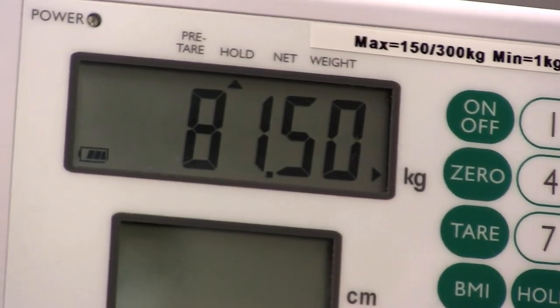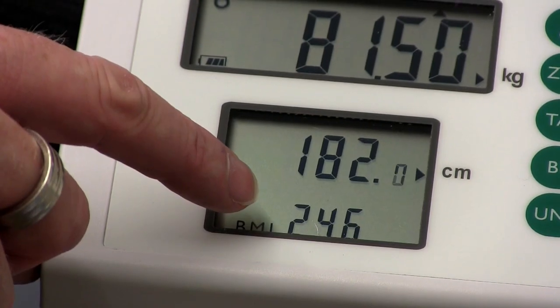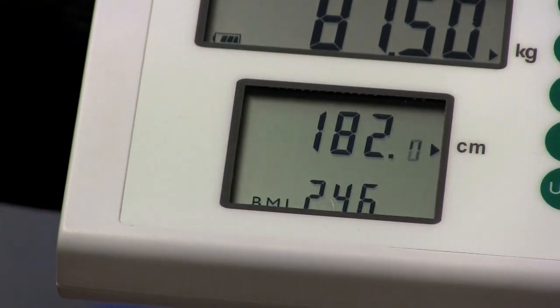An optional printer can also be connected to the scale, so weight, height and BMI data can be printed off and added to the patient's file.